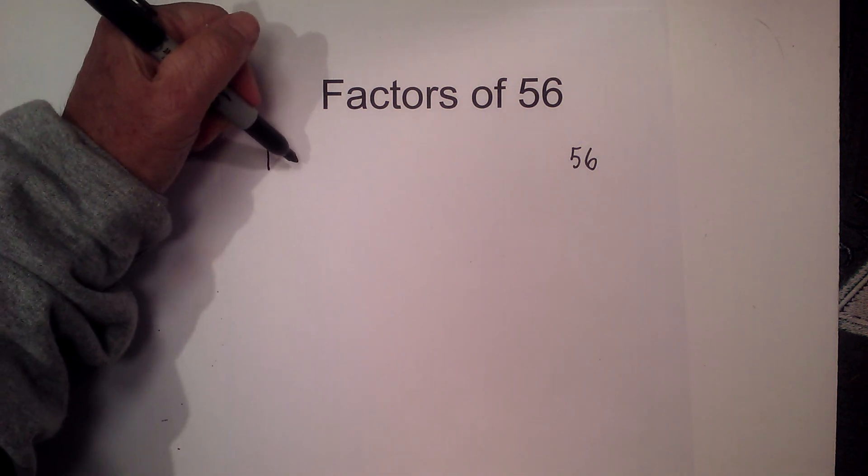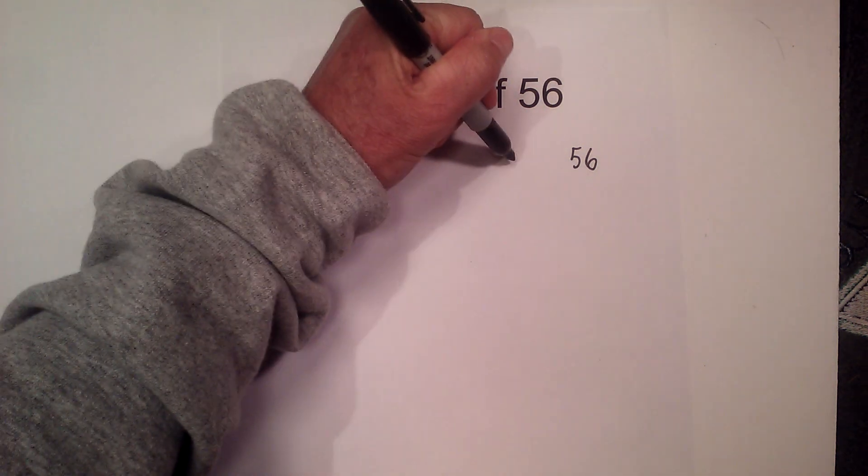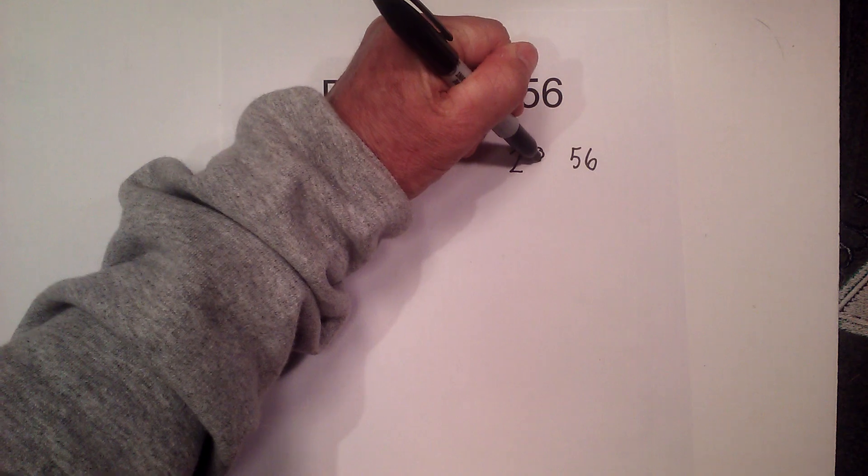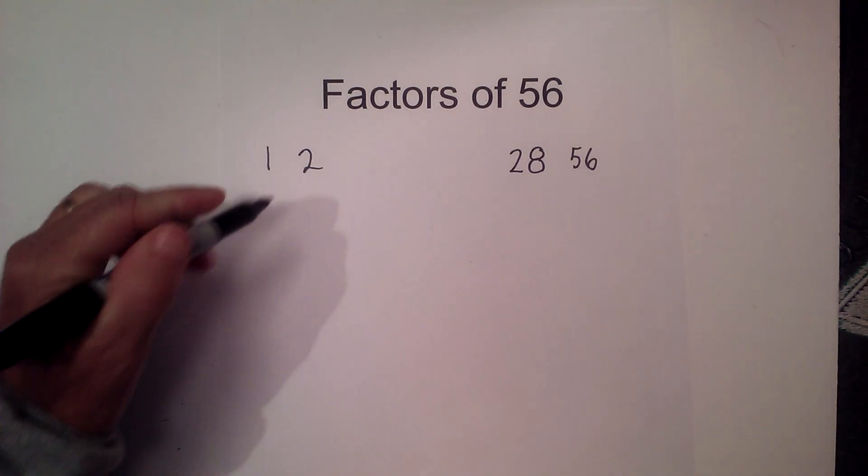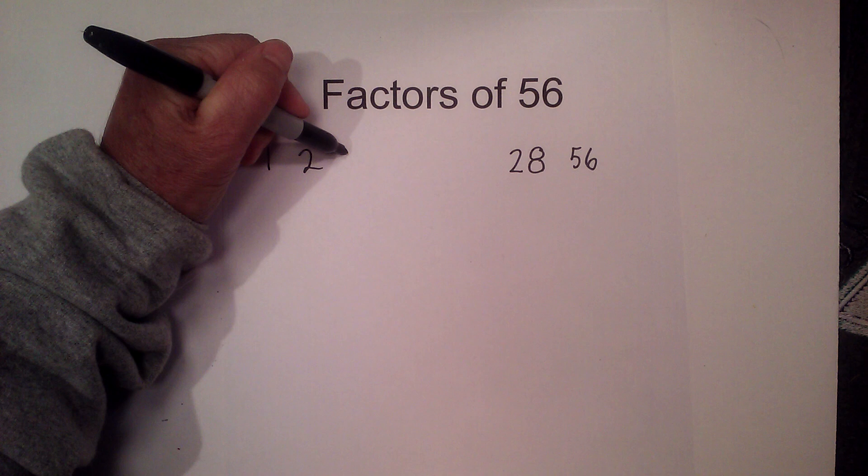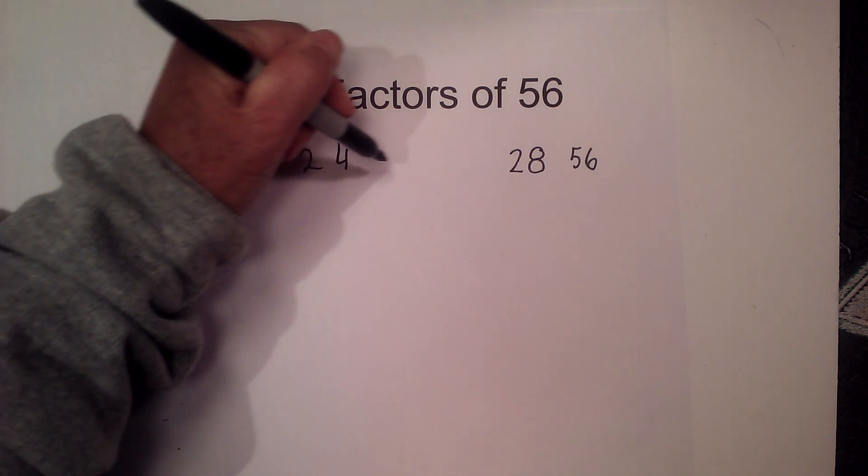So I know 2 times 28 equals 56. 3 does not go into 56, but 4 goes into 56.